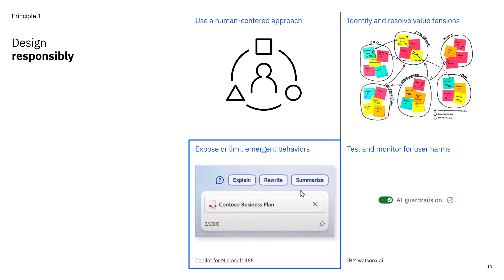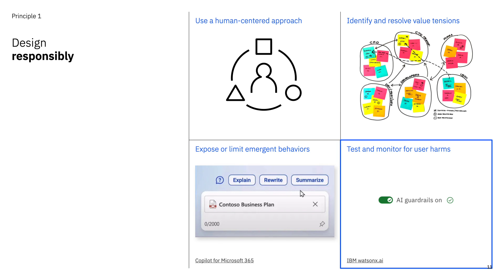One of the key characteristics of generative AI is the fact that it may behave in ways that are unexpected — we call these emergent behaviors. These can especially crop up in conversational interfaces where there's no limit to what users can ask. As a designer, you can restrict these behaviors by placing the generative functionality behind UI controls, such as how Microsoft 365 Copilot uses buttons to invoke specific generative tasks. It's also crucial to test and monitor for user harms by identifying use cases, evaluating model risks, and developing mechanisms for users to report harms should they happen.